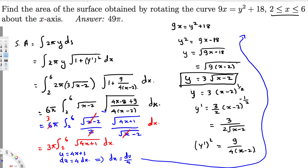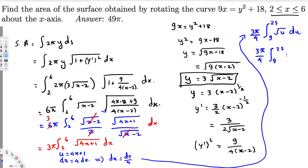Now writing everything in terms of u: the constant 3π/4 stays in front. The new limits: when x = 2, u = 4(2) + 1 = 9; when x = 6, u = 4(6) + 1 = 25. The integral becomes 3π/4 times the integral from 9 to 25 of u^(1/2) du.